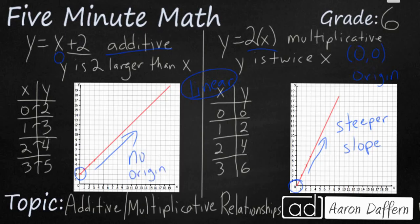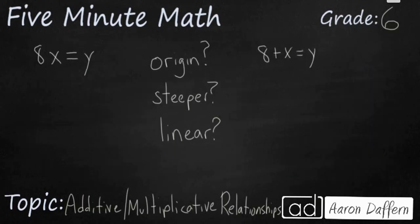So those are a few ways that you can tell the difference between a multiplicative and an additive relationship. Now take a look at these two equations: 8x equals y and 8 plus x equals y. First off, which one is multiplicative? Which one is additive? Which one, or do both, go through the origin? Which one of these is going to be steeper? And which one, or both of these, are going to be linear graphs? When you have your answers, go ahead and unpause the video and check your work.